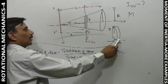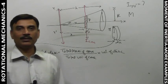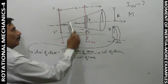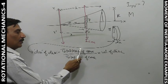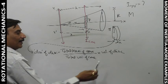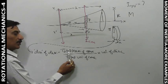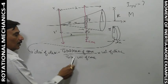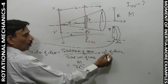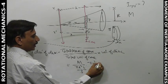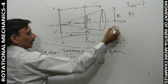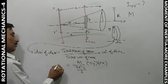The mass dm of the disc is total mass of cone over total volume of cone, multiplied by the volume of the disc. Mass per unit volume times volume of disc. Total mass is m, total volume is πr²h/3. Volume of disk is π·y²·dx. So dm = (m / (πr²h/3)) · π·y²·dx, which gives dm = 3m·y²·dx / (r²·h).